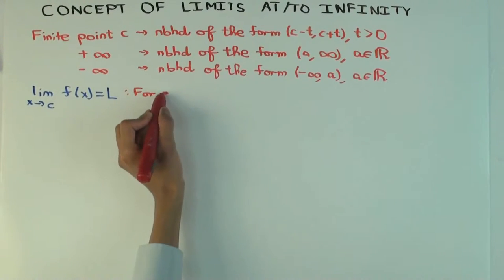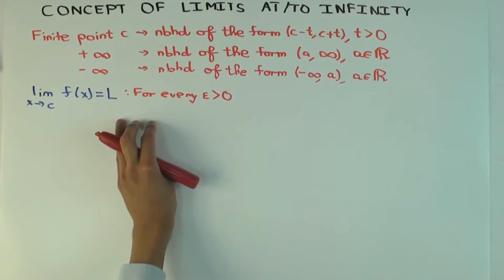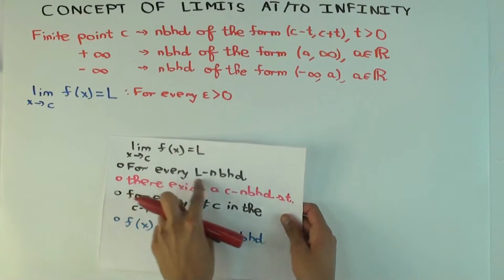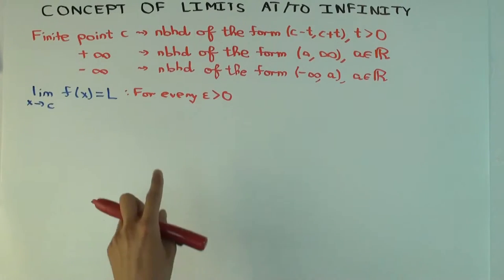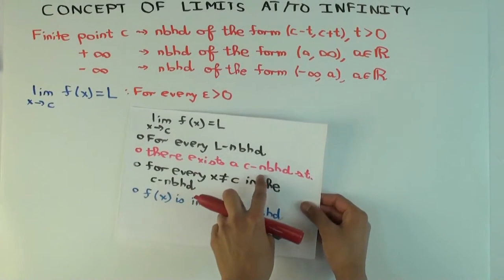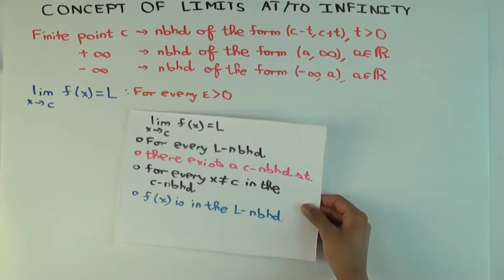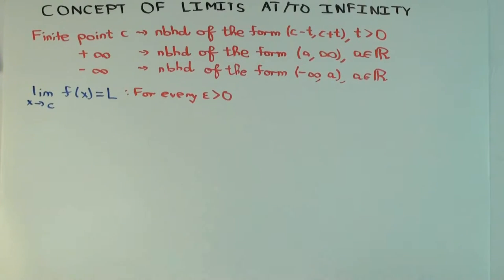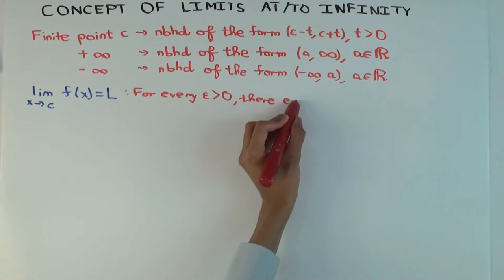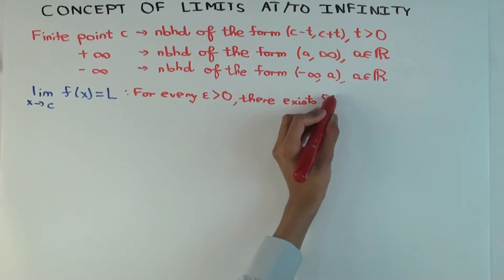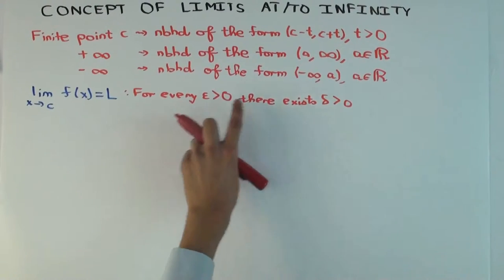This is the usual definition, but now we're just interpreting it. When I specify epsilon, I'm implicitly specifying a neighborhood of L — epsilon is just the radius of that neighborhood. Now I need to specify a neighborhood of c. I can't use the same letter for the radius of the neighborhood of c because it could be different, so the convention is to use delta. So epsilon implicitly specifies the interval (L − ε, L + ε) and delta implicitly specifies the interval (c − δ, c + δ).